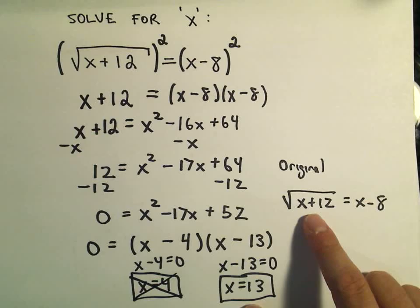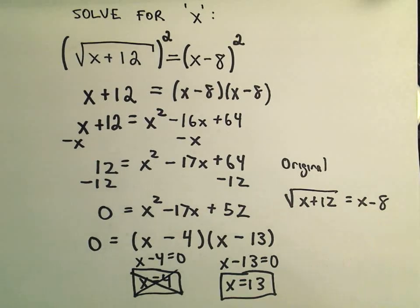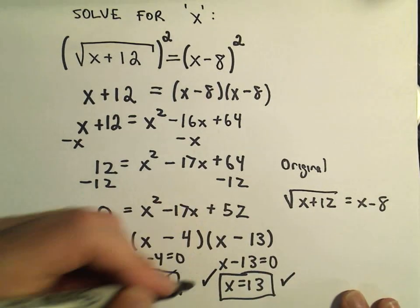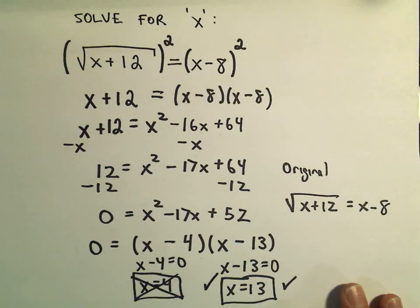But notice if we plug 13 in, we would get 25 under the radical, which the square root of 25 is 5. 13 minus 8 is 5. So this solution does check out. We have one solution to our original equation, namely the number 13.